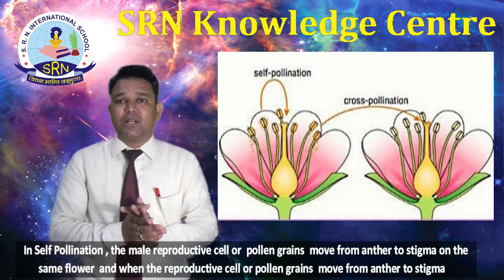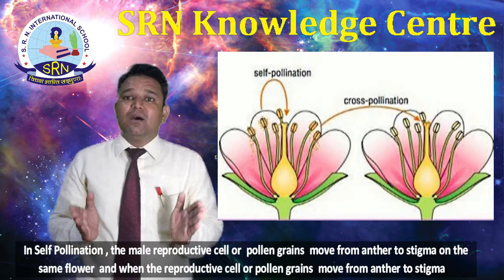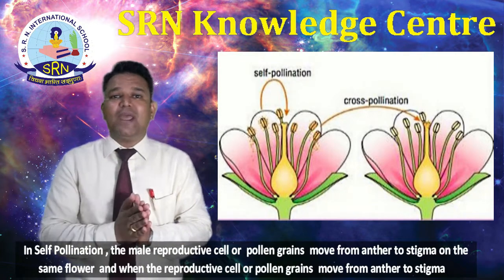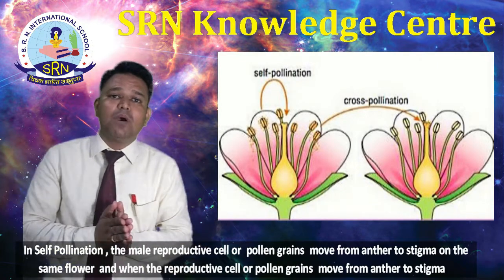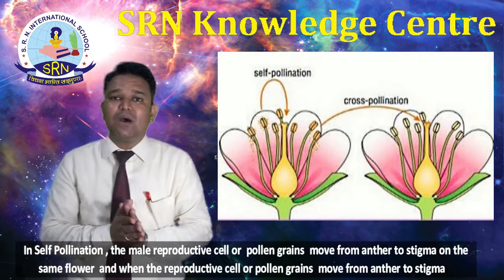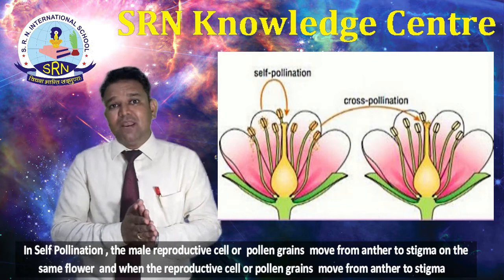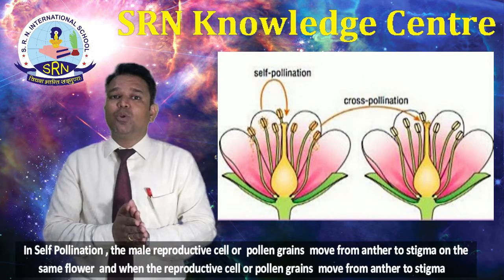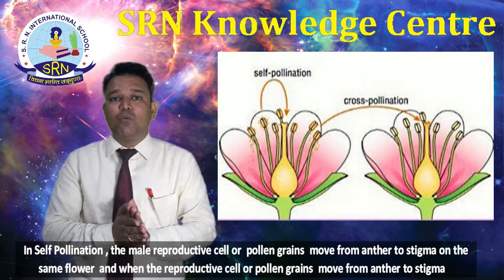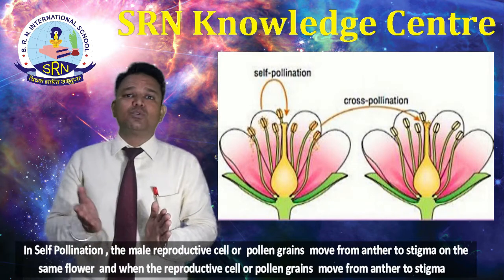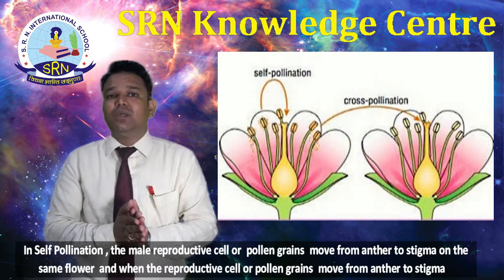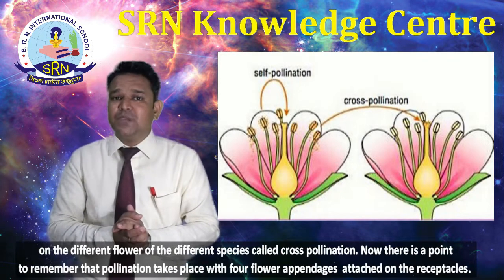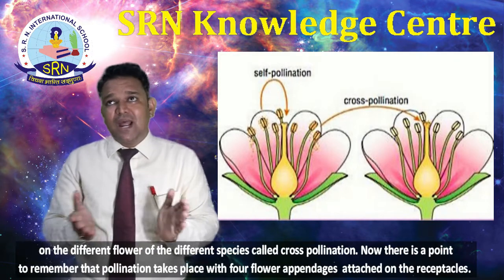In self pollination, the male reproductive cell, or the pollen grains, move from anther to stigma on the same flower. In cross pollination, the pollen grains move from anther to stigma on a different flower of a different species.